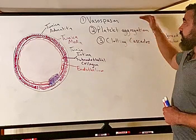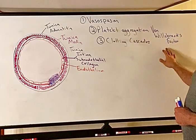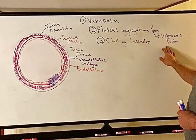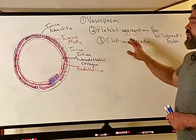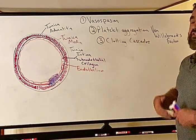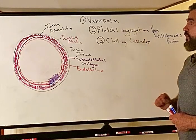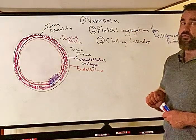To summarize blood clotting: vasospasm reduces blood loss; platelets become activated and aggregate due to von Willebrand's factor to form the platelet plug; and the clotting cascade — which takes longer — forms the stable fibrin clot. The clotting cascade will be covered in the next video.